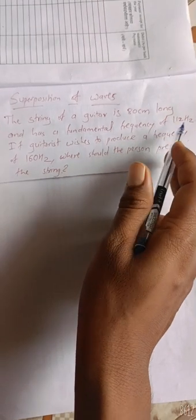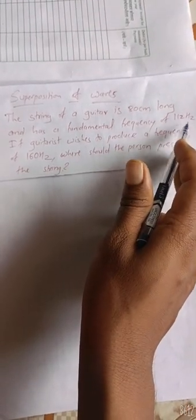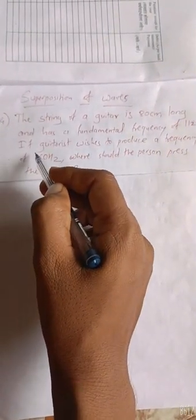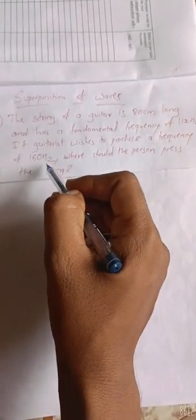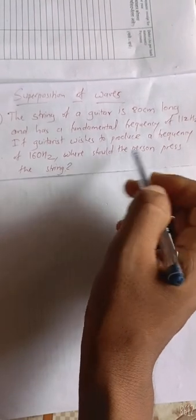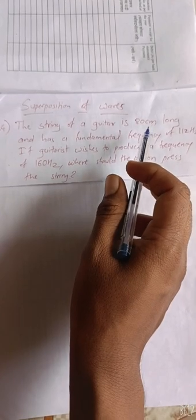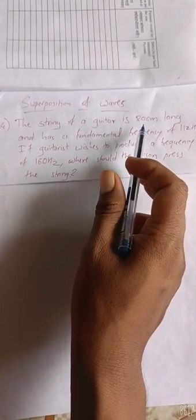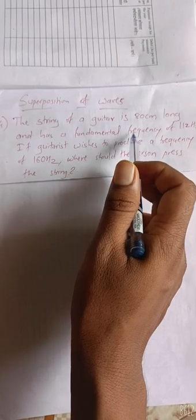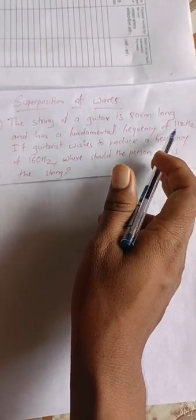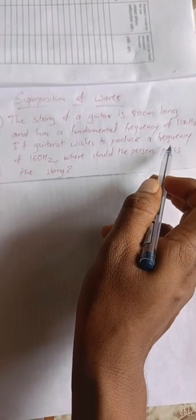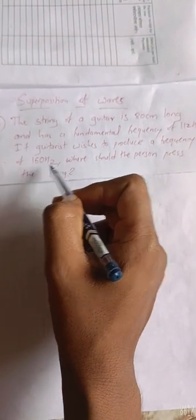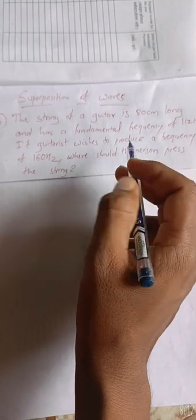If a guitarist wishes to produce a frequency of 160 hertz, where should the person press the guitar? A guitar string of length 80 centimeter has a fundamental frequency of 112 hertz. If the guitarist wants to produce a frequency of 160 hertz, then where should they press the guitar? This is a very easy problem.